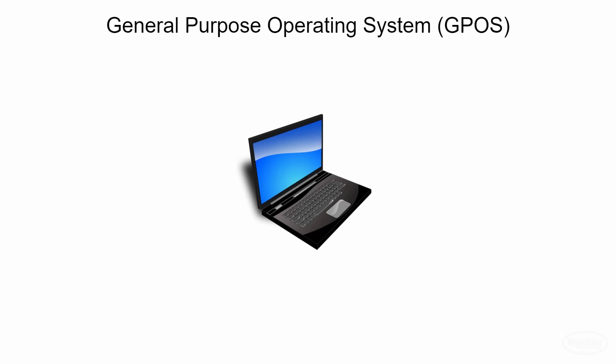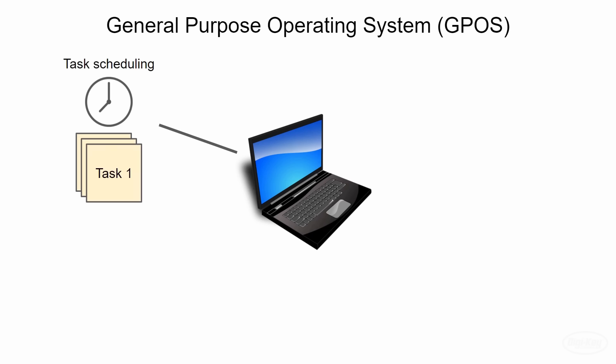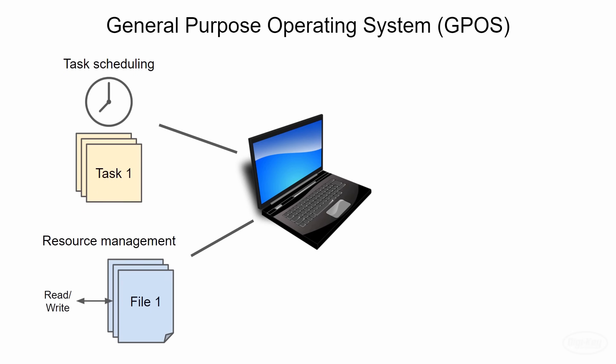An operating system is a piece of software that runs on a computer or microcontroller that accomplishes a number of important functions. First, it is in charge of scheduling background tasks and user applications. In most operating systems, dozens of background processes are executing at the same time, and the operating system figures out how to give slices of time to each of these processes so that everything appears to be happening concurrently. Second, it manages a number of virtual resources, like files, libraries, and folders, allowing applications and processes to access them when needed.